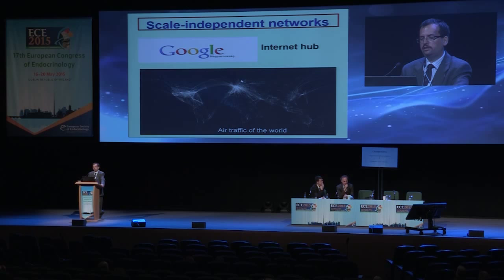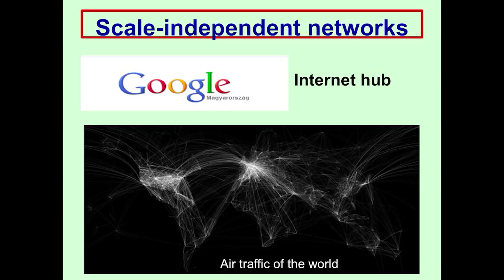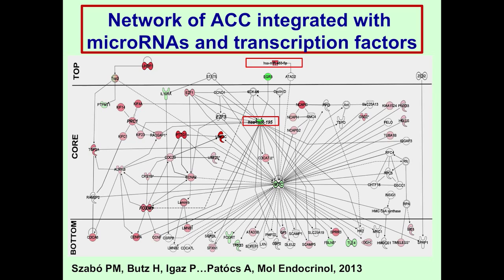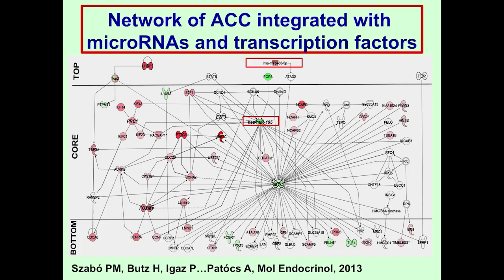I would like to briefly include the relevance of network analysis in microRNA studies. Biological networks are mostly scale-free networks — like the Internet or the world's air traffic. Just as important airport hubs have many connections and losing a hub like Heathrow or Atlanta would collapse the whole air traffic, the same is true for gene expression networks. Constituting the gene expression network of ACC with microRNAs, the underexpressed miR-195 seems to be a major hub interconnected with many other genes, and miR-483 seems to be a top regulator potentially affecting the whole gene expression network.